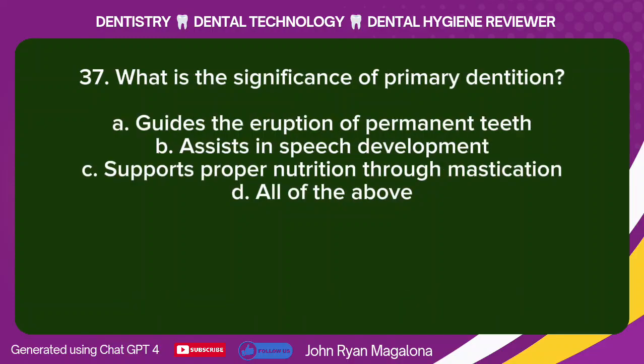Question 37: What is the significance of primary dentition? A. Guides the eruption of permanent teeth. B. Assists in speech development. C. Supports proper nutrition through mastication. D. All of the above. Answer: D. All of the above.